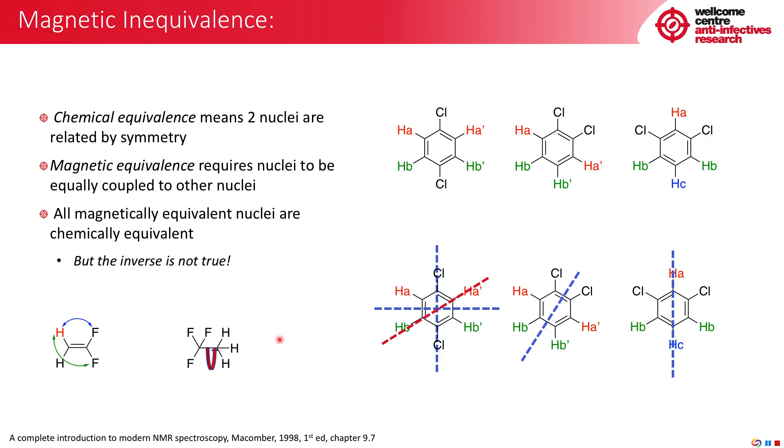So we've got to start with the idea of magnetic equivalence. We're all used to the idea of chemical equivalence. In these isomers of dichlorobenzene here, all of the A protons are equivalent to the other A protons and the Bs are equivalent to the other B protons. This is because if we rotate the molecule, they would be equal to one another. They couple to equivalent, chemically equivalent nuclei.